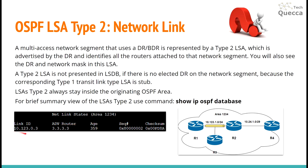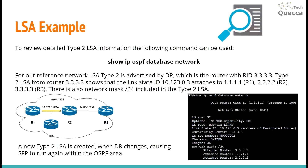This shows our designated router, age of LSA, sequence number, and checksum. To review detailed Type 2 LSA information, the following command can be used: SHOW IP OSPF DATABASE, same as the previous one, and we can add the word NETWORK.